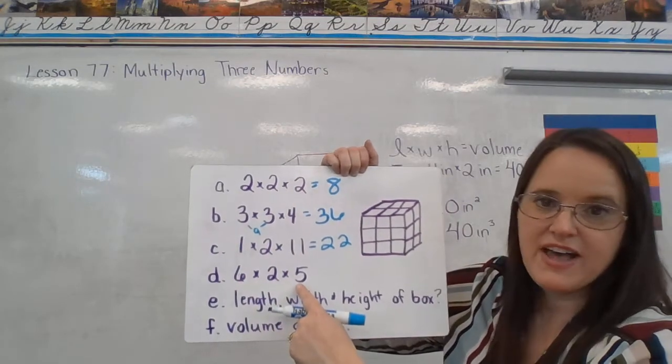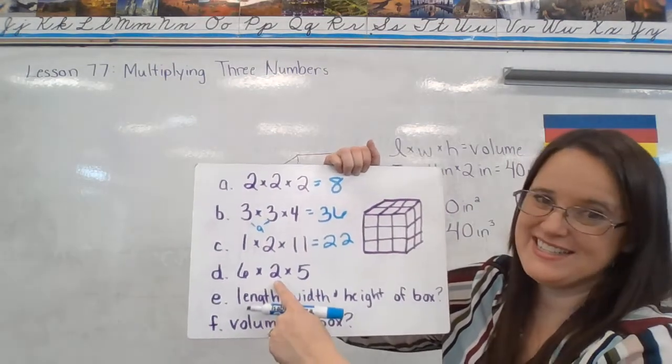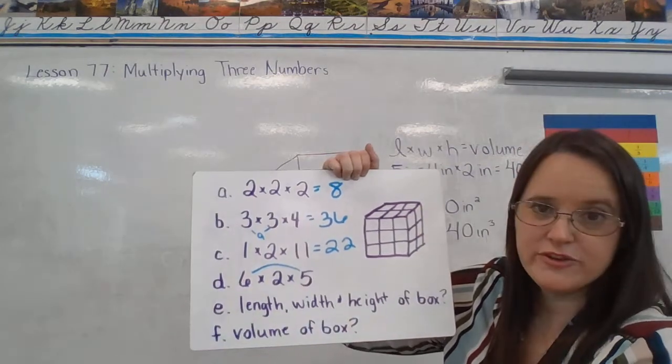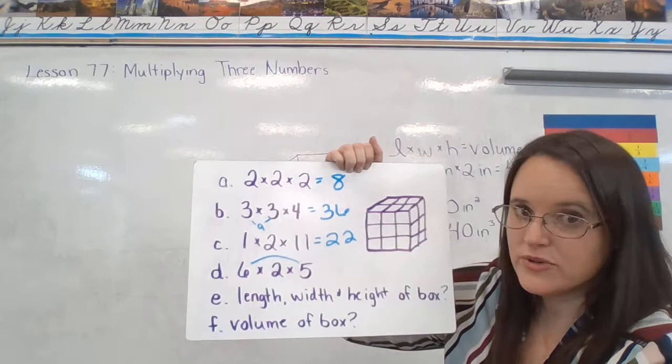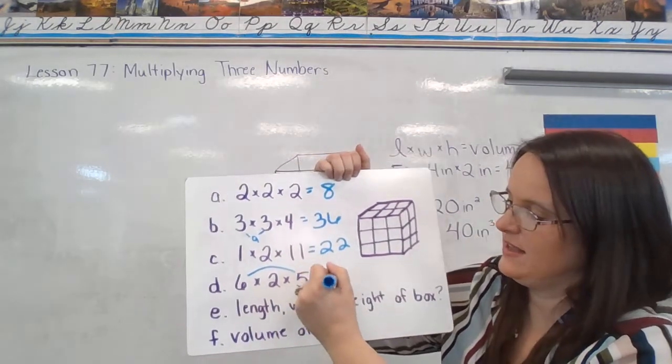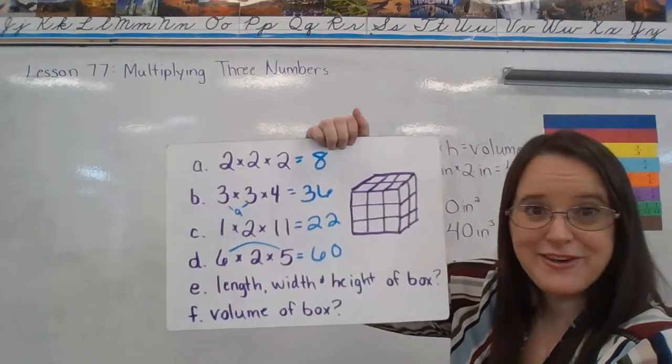6 times 2 times 5. It's easy to double at the end. So I want to do my 6 times 5 first. 6 times 5 is 30. And then if I double 30, I get 60. How are you doing so far?